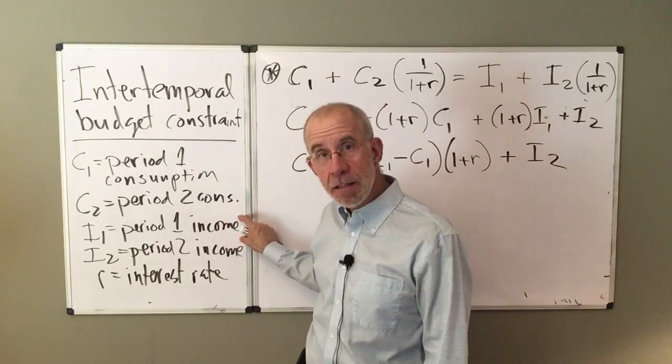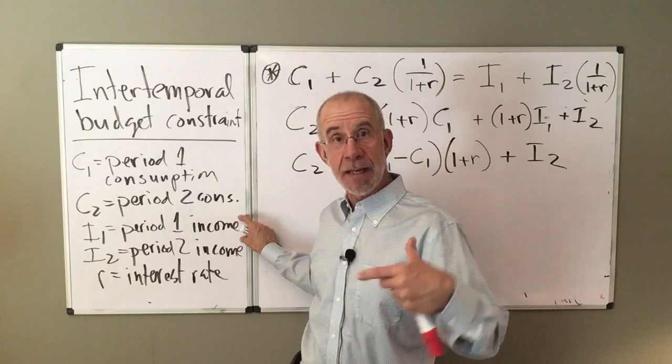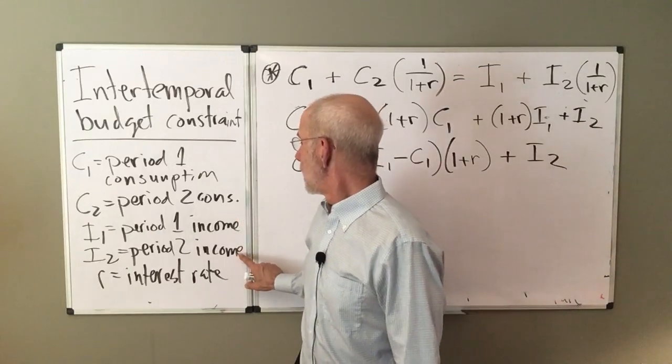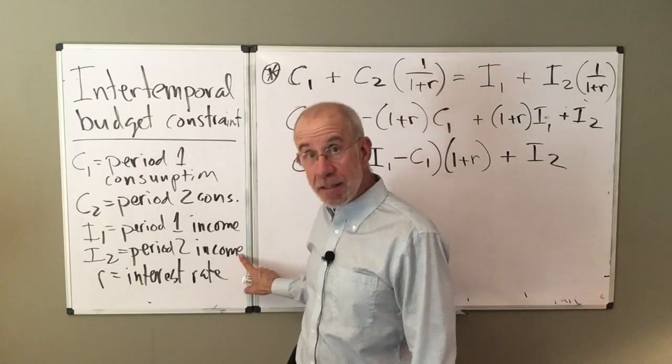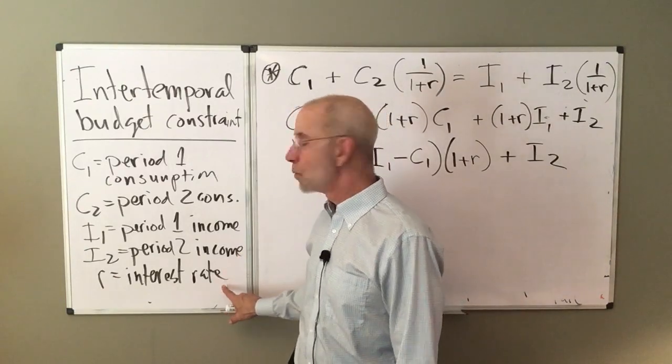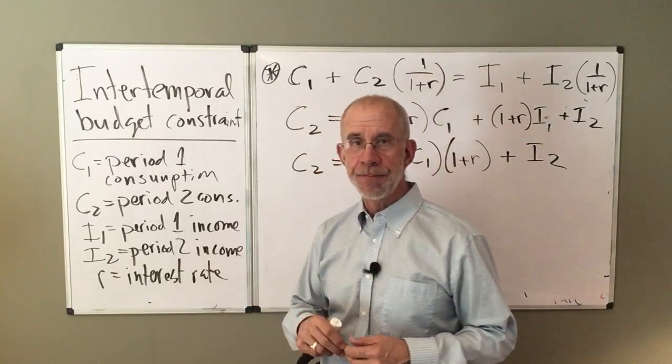I1 is the income that the consumer gets in the first period today. You also potentially have income that you receive in the second period. And then we have the interest rate.